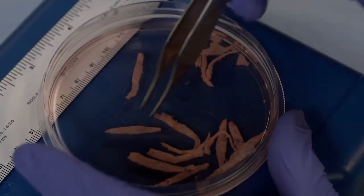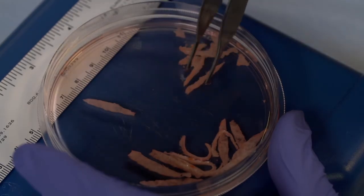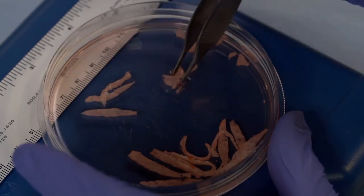Count the number of cortical strips and then divide the strips between patient use and research. Follow the Form 4 for additional research handling instruction.